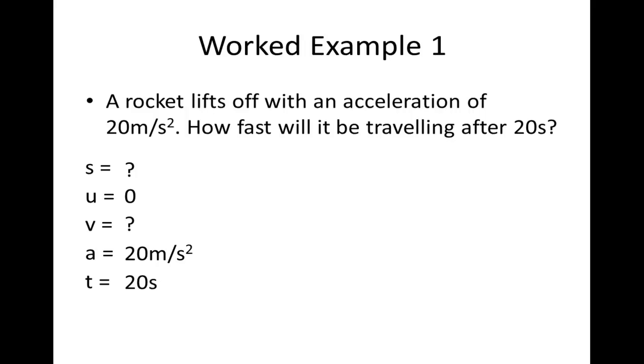So, looking at this, we can discard S or displacement and use an equation of motion which utilizes U, V, A and T. And from before, we can use equation 1. Simply substituting in the values, we get the velocity is 400 meters per second after 20 seconds.